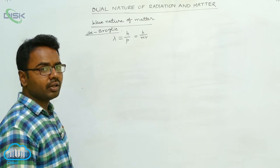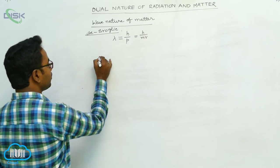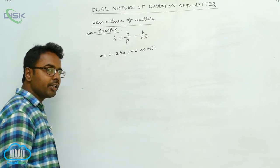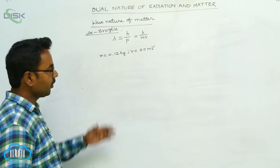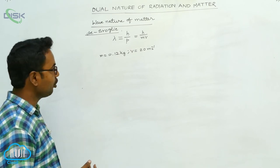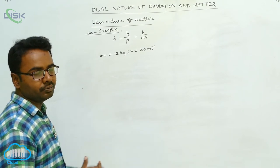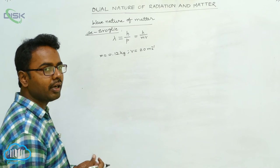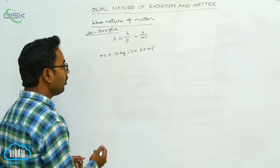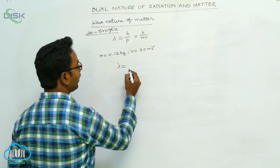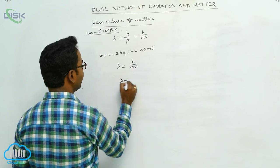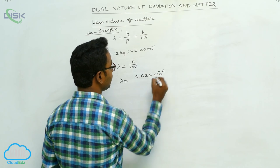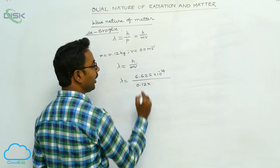Let us take an example. There is a ball having a mass m equal to 0.12 kg, and it is traveling with a velocity of 20 meters per second. Is there any wave associated with it? Yes, there is a matter wave associated with it. Let us find the wavelength of the matter wave for this ball. According to De Broglie, lambda equals h by mv. Here, h is Planck's constant, with a value of 6.625 into 10 to the power of minus 34 joule-seconds, mass of the ball is 0.12 kg, and velocity is 20 meters per second.